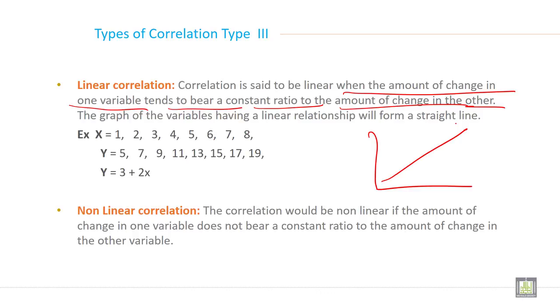Non-linear. The correlation would be non-linear if the amount of change in one variable does not bear a constant ratio to the amount of change in the other variable like this. This is curvilinear relationship you can say. This is non-linear relationship and this is linear relationship. Thank you.